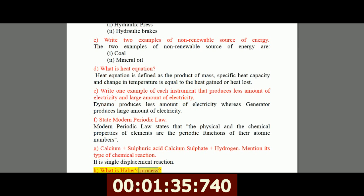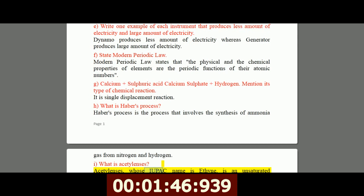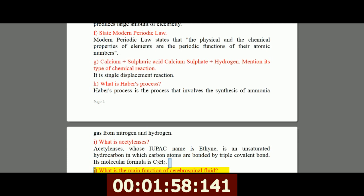H, what is Haber's process? Haber's process is a process that involves the synthesis of ammonia gas from nitrogen and hydrogen. I, what is acetylene? Acetylene, whose IUPAC name is ethyne, is an unsaturated hydrocarbon in which carbon atoms are bonded by triple covalent bond. Its molecular formula is C2H2.